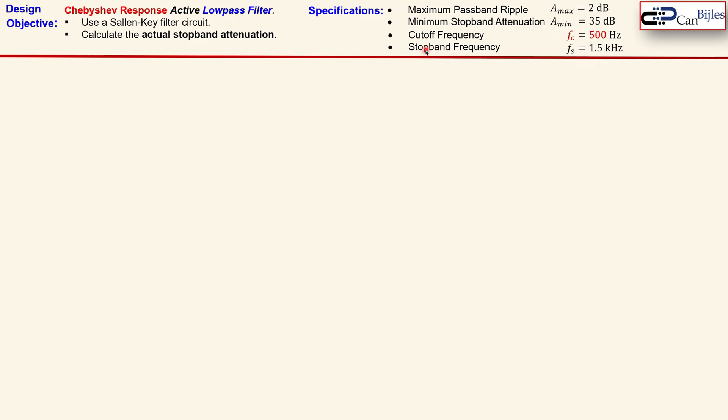So the meaning of these specifications is as follows. At this frequency of 1.5 kHz, we need to have an attenuation which is minimum 35 dB. Let's see how we can work out the calculation for this design.